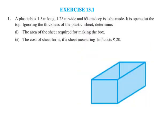Exercise 13.1, problem number one. A plastic box 1.5 meter long, 1.25 meter wide and 65 centimeter deep is to be made. It is opened at the top. Ignoring the thickness of the plastic sheet, determine the area of sheet required for making the box and the cost of sheet if one square meter costs 20 rupees.